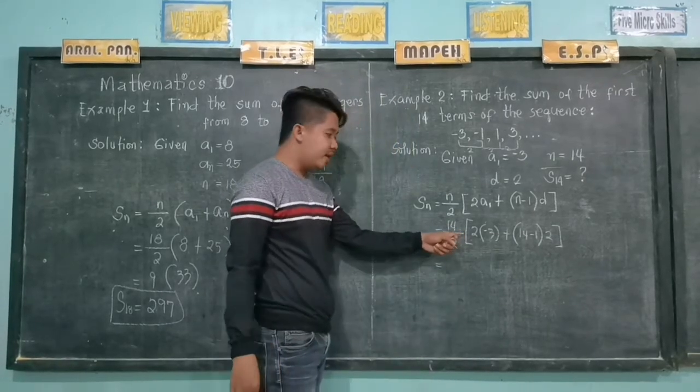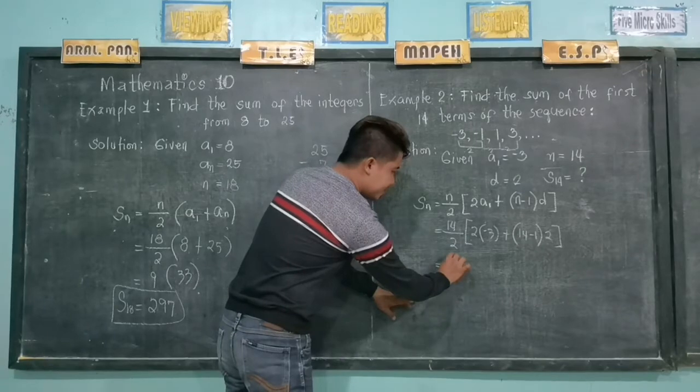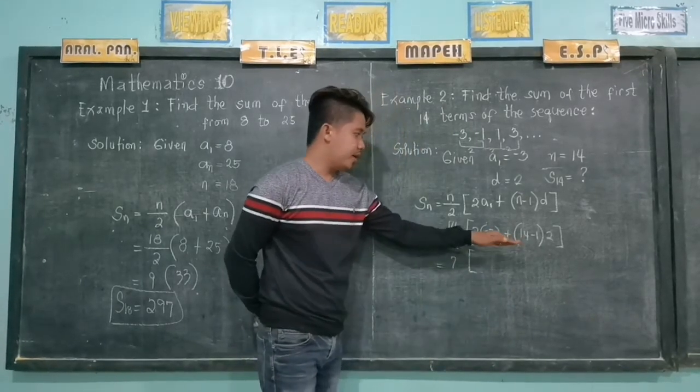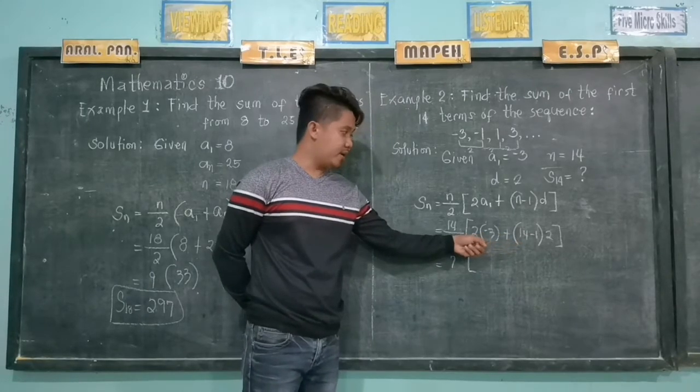Now, 14 divided by 2, we have 7. And then in here, we can multiply. We can multiply here.